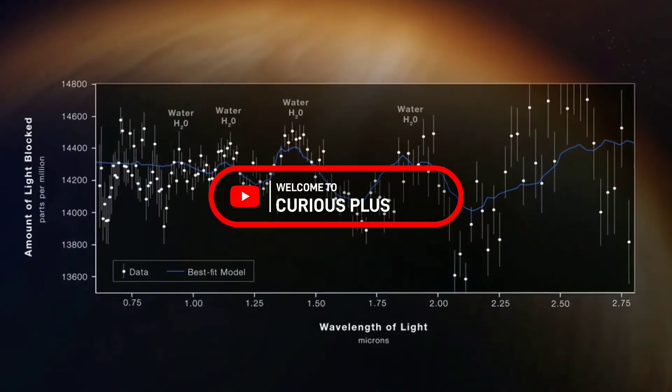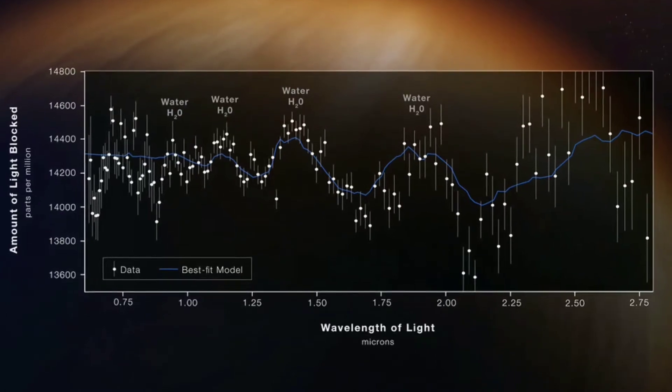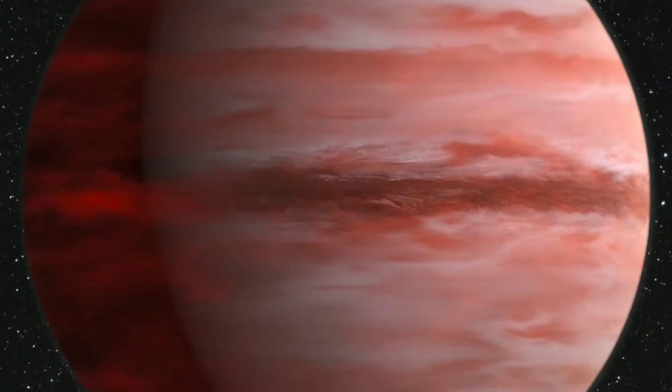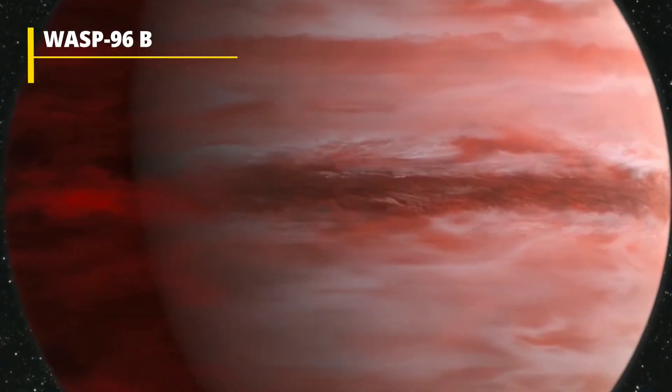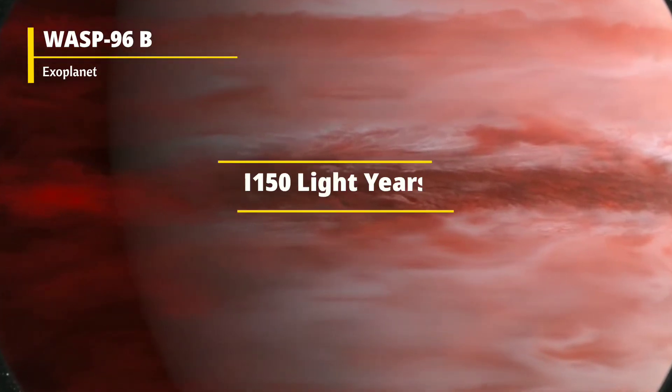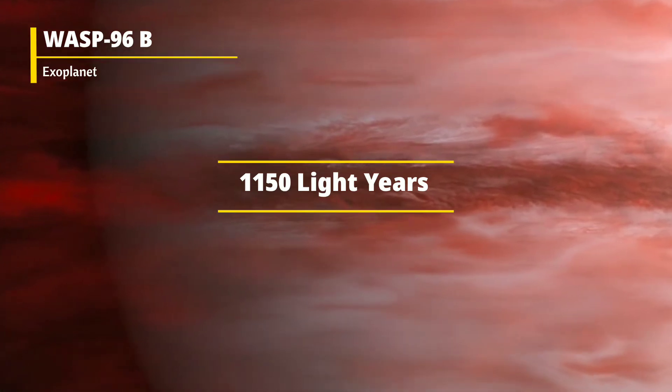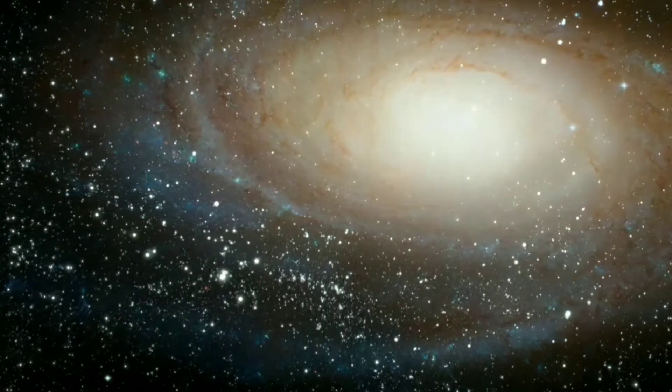The recently released data by NASA shows that the James Webb Space Telescope has successfully found the evidence of water on an exoplanet named WASP-96b. This planet is at a distance of 1150 light years from us. It's one of more than 5000 confirmed exoplanets in the Milky Way galaxy.